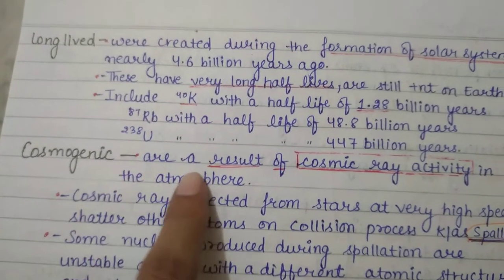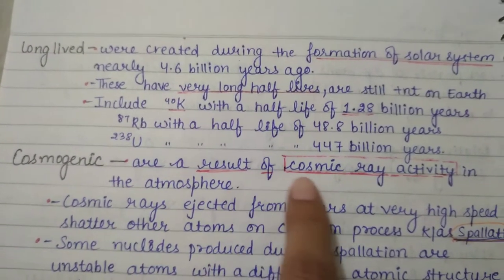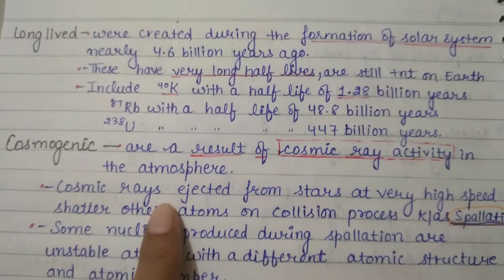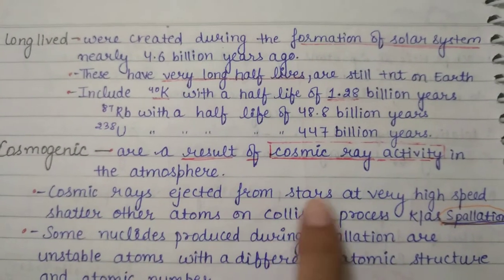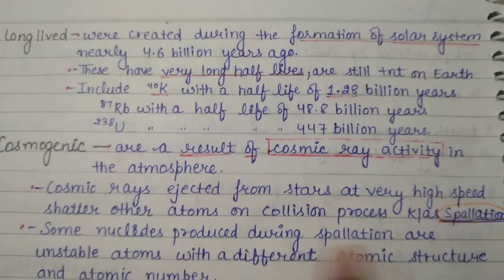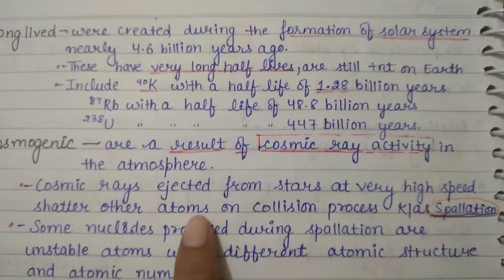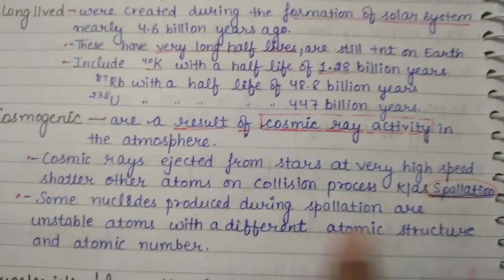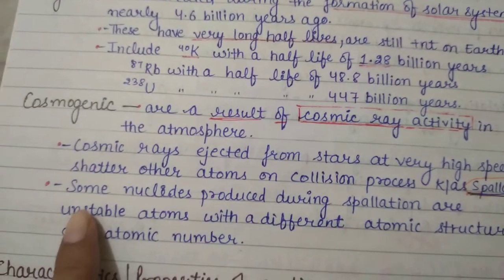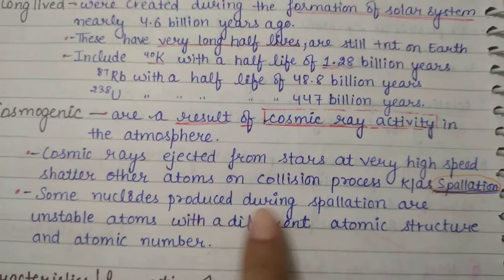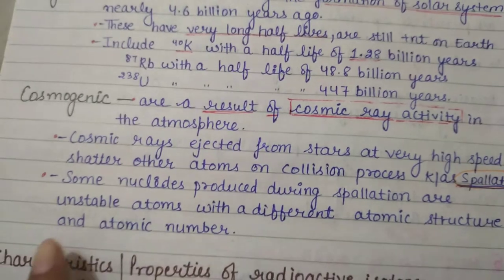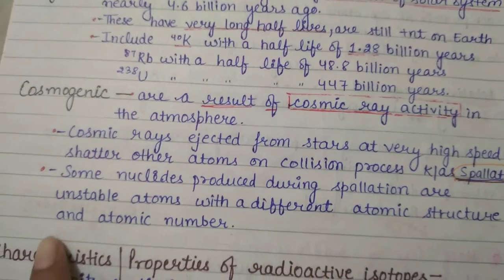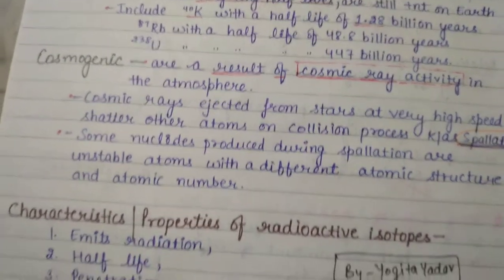Cosmogenic radioisotopes are a result of cosmic ray activity in the atmosphere. Cosmic rays ejected from stars at very high speed shatter other atoms on collision — a process known as spallation. Some nuclides produced during spallation are unstable atoms with a different atomic structure and atomic number.